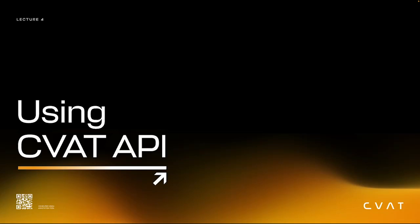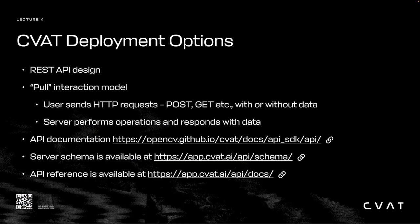Hello. In this lecture, we'll go over how to use the CVAT REST API. We use a pool interaction model in which the user sends HTTP requests. You send the server data, the server performs a set of actions, and then it responds with some new data. You can find documentation about what data to send and what data will be received on the documentation page, which is linked at the bottom of this slide. You can also find the API's reference and schema, which tells you similar information.